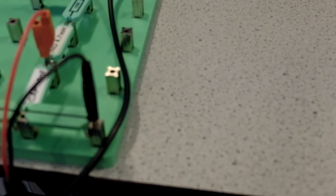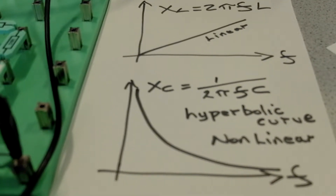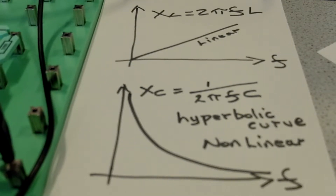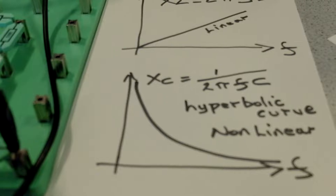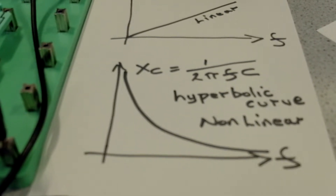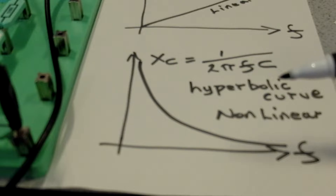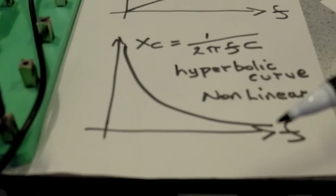If we look at opposition to current flow, we can plot out our XL and XC values. XL is linear, so as we increase the frequency, the opposition to current flow from the inductor responds in a proportional manner. However, with the capacitor there's a one-over effect, so it forms a hyperbolic curve. As we go to higher and higher frequencies, the opposition from the capacitor becomes extremely small. But when we go down to very low frequencies towards DC, the capacitor effectively blocks DC because the XC value goes to infinity.